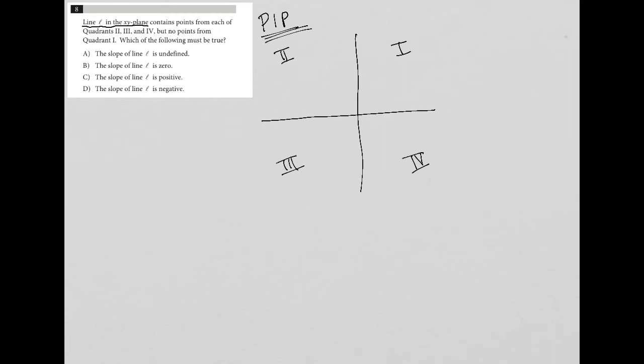So our line L is in quadrants 2, 3, and 4, which means we could have something like this. It doesn't mean that line L is exactly that line, but just so I have a visual on how that's possible, I'm going to draw that line. So, but no points in quadrant 1. So my line L is in quadrants 2, 3, and 4, but not quadrant 1.